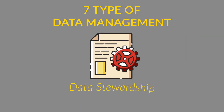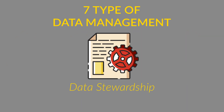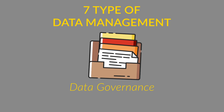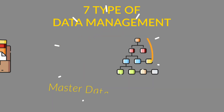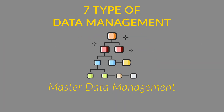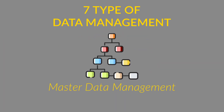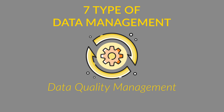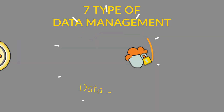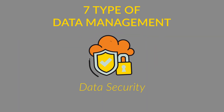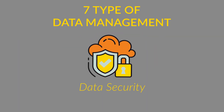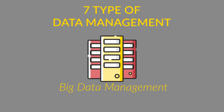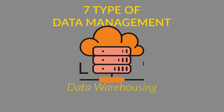The seven key areas are: Data Stewardship, Data Governance, Master Data Management, Data Quality Management, Data Security, Big Data Management, and Data Warehousing.